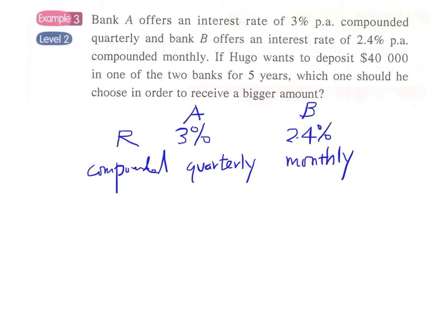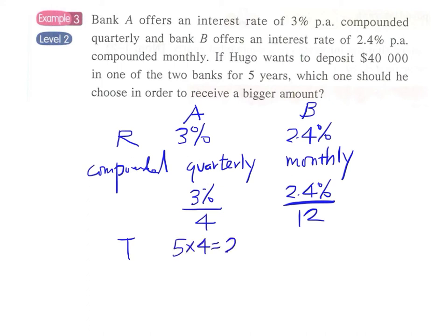For Bank A, we have 3% per annum and we divide it by four, so 3%/4 is the interest rate in each interval of three months. For Bank B, the interest rate should be adjusted by dividing 2.4% by 12, since each interval is one month. The total time is five years, and since one year has four quarters, in five years there will be 20 intervals for Bank A.